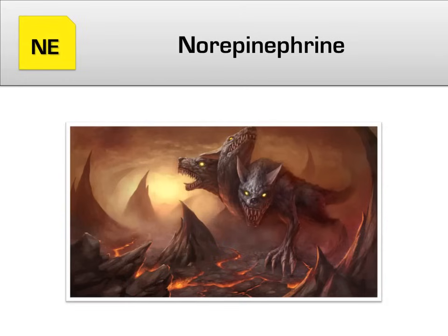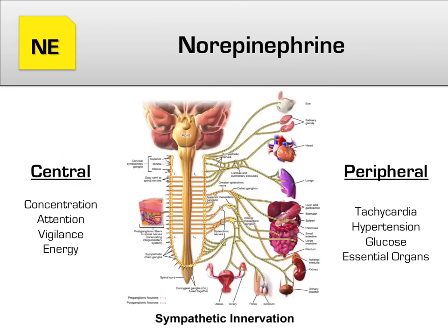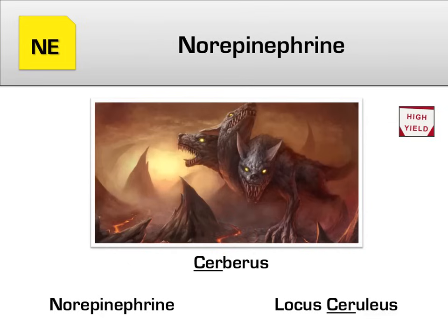Norepinephrine, our next neurotransmitter, is a key component of the sympathetic nervous system and its associated fight-or-flight response. If you see a scary creature such as a cerberus, your body is likely to release lots of norepinephrine into the brain while releasing its counterpart epinephrine peripherally into the bloodstream. Your brain would snap to the current moment, concentrating and focusing. You would get a burst of energy, increased heart rate, raised blood pressure, release of glucose, and non-essential services like digestion put on hold. Like serotonin in the raphae nucleus, the fact that norepinephrine is produced in the locus ceruleus is frequently tested. Cerberus ceruleus — if you can remember that connection, you'll be prepared to answer the inevitable test questions.